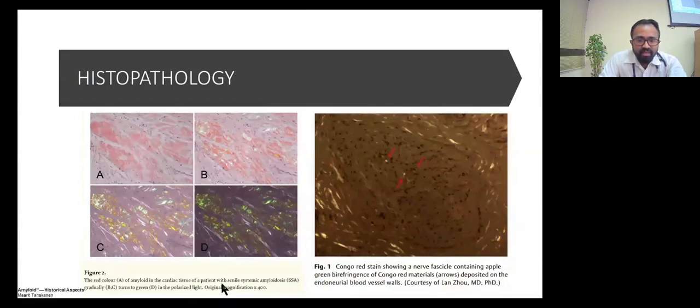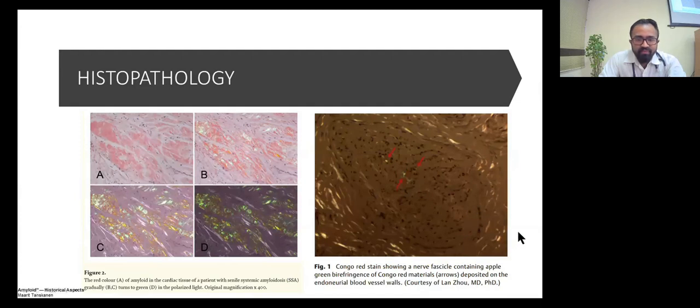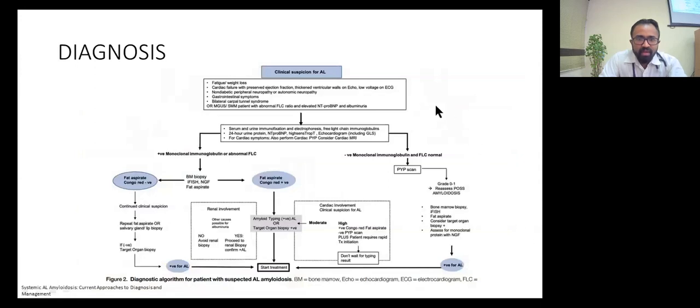Coming to characteristic histopathology findings, what is described is an apple-green birefringence. If we look at this, this is a nerve fascicle while this is cardiac tissue. We can see after staining with Congo red stain, there is the apple-green birefringence of the Congo red materials on both. This is characteristic seen on histopathological examination. Looking at our patient, she had fatigue and weight loss, thickened ventricular valves on echo, non-diabetic peripheral neuropathy, and elevated free light chain ratio and NT-proBNP. We subsequently did immunofixation, 24-hour urine protein, and ideally would perform cardiac MRI. After bone marrow biopsy, a simple test is the fat pad aspirate that will give a diagnosis. But our patient had significant renal involvement, hence we went ahead with renal biopsy, and that was how we confirmed the diagnosis.